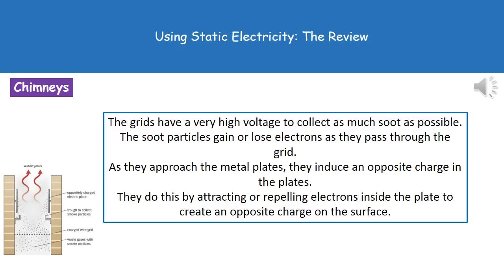As the charged particles pass up toward those metal plates, they attract or repel electrons inside the plate. This creates an opposite charge on the very surface of the plate, which then attracts the soot and dust particles to it — this is called inducing an opposite charge.